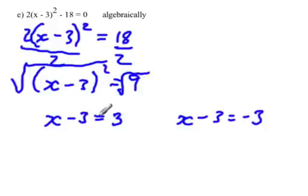So now we just solve for x. So this is x is equal to... Add 3 to both sides... 6.